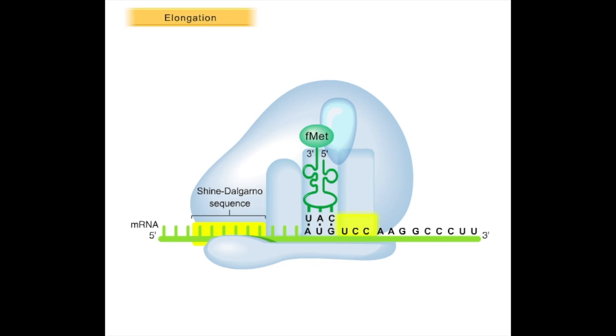In this case, the codon is UCC, which encodes serine. The serine-bearing tRNA in the cytoplasm forms a complex with elongation factor TU and GTP.